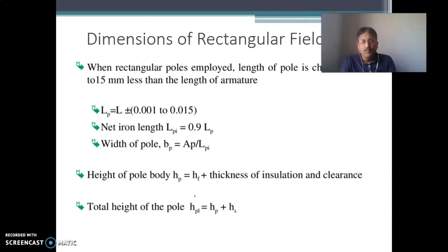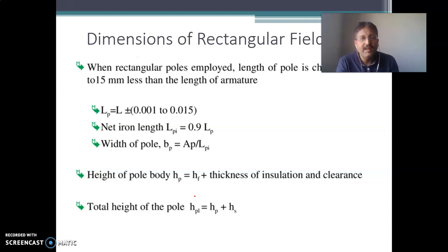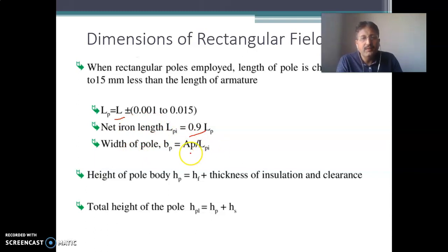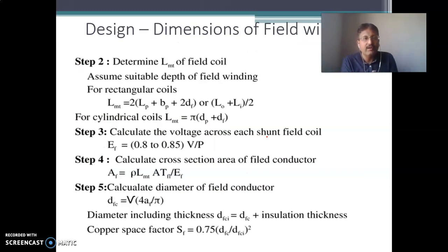If the field pole is rectangular, you have to choose the length of the pole — the length of the pole is generally 10 to 15 mm less than the length of the armature L. Once you get the length of the pole, consider the net iron length by applying the stacking factor of 0.9. Width of the pole is the area of the pole divided by the net iron length. The height of the pole body is height of the field winding plus thickness of insulation and clearance.